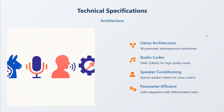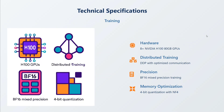Talking about the technical specs: LLaMA architecture, audio codec is SNAC at 24kHz for high quality audio, speaker conditioning with special speaker tokens for voice control. You need to provide a token within the prompt. Parameter-efficient low-rank adaptation with differentiated ranks is also used.